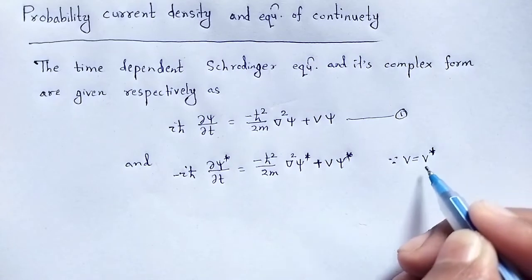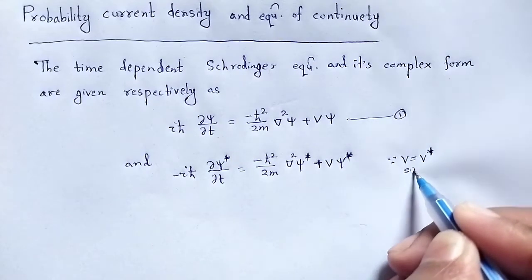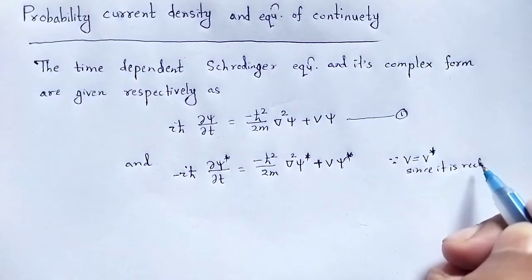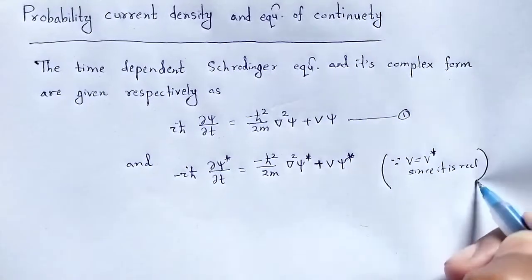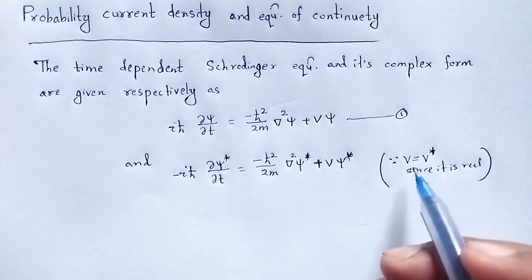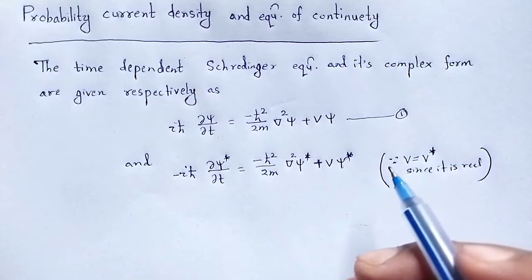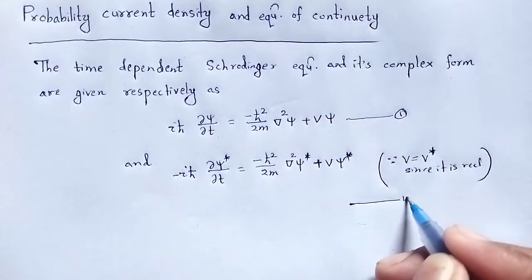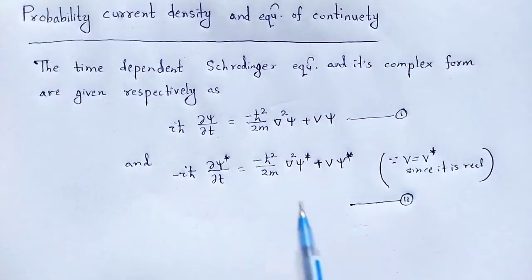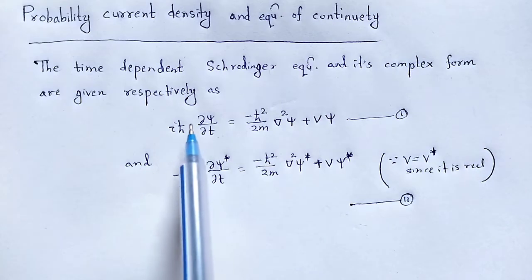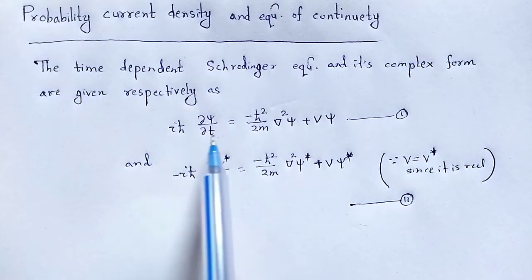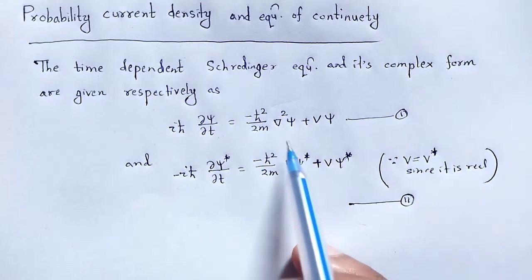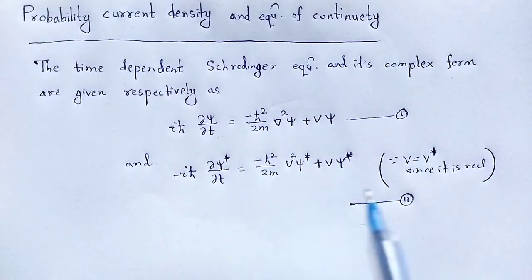Since V is a real quantity, the conjugate of a real number is a real number, so there will be no such change. That is equation number 2. Now, we have to multiply ψ* in equation 1 and ψ in equation 2, and subtract equation 2 from equation 1.